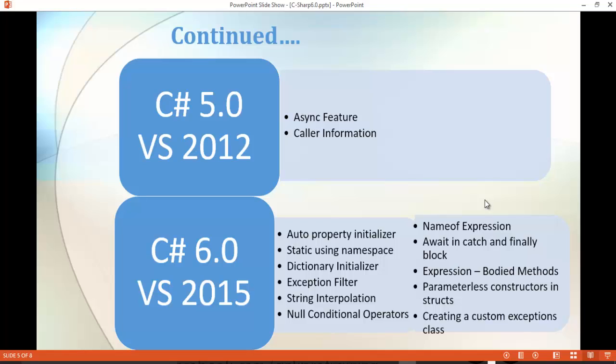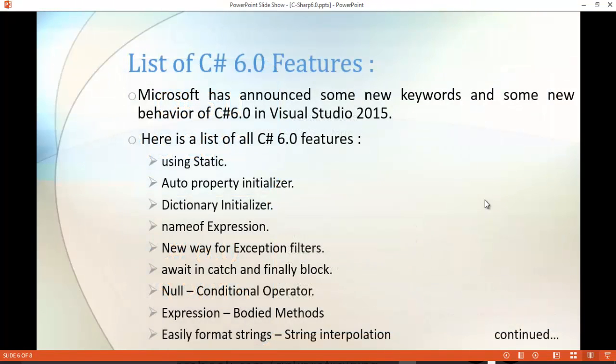In this session, what we are going to do with C-Sharp version 6 features is just see the list of features which are present in C-Sharp version 6. To present this, I have a separate slide. You can observe here the list of C-Sharp version 6 features.